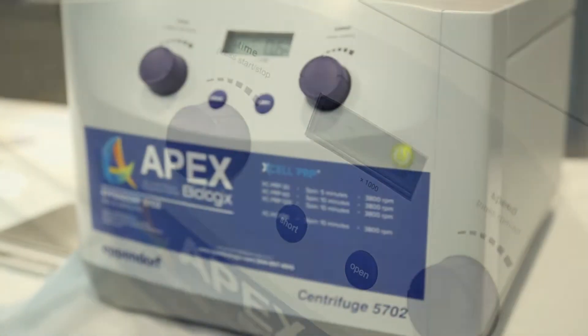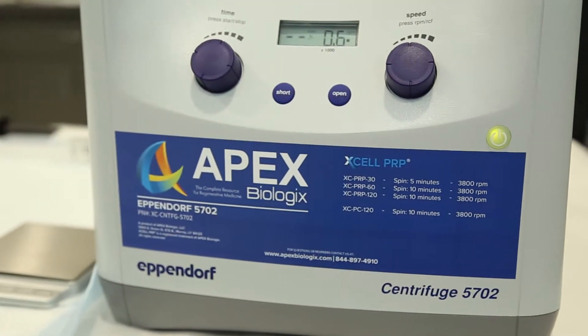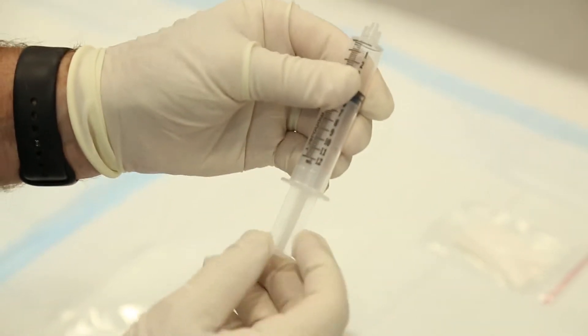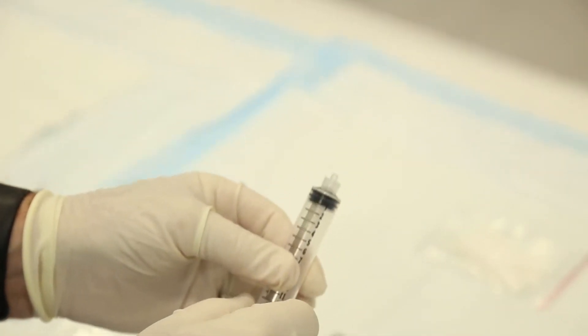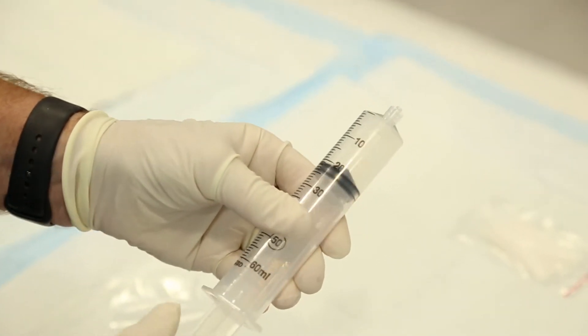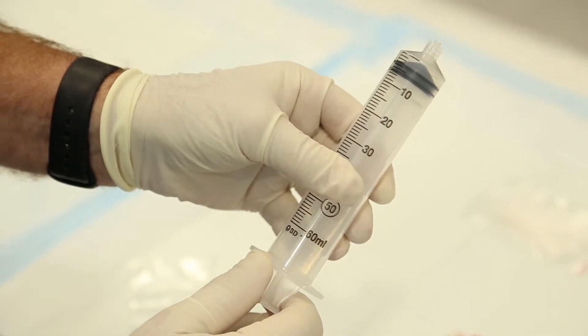While your sample is spinning in the centrifuge, prime your 60 ml and 12 ml syringes. Prime the 12 ml syringe to ensure that the barrel moves freely. Now prime the 60 ml syringe, leaving 5 ml of air in the syringe to prevent splatter.